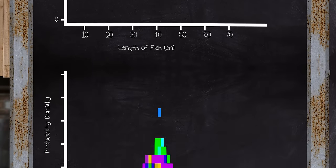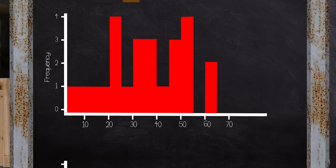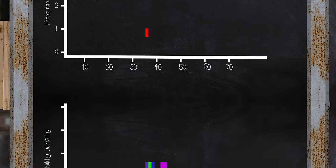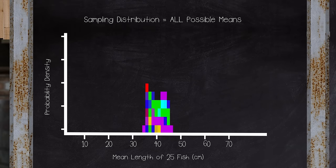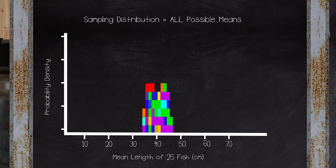It's important to remember that this sample mean is just one of many we could have gotten just by chance. We would have a different sample mean each time we collect data, because each set of fish is slightly different from one another. Look at this histogram. It's starting to show not 1, not 2, not 3, not 4, but all of the possible sample means we could have ended up with.